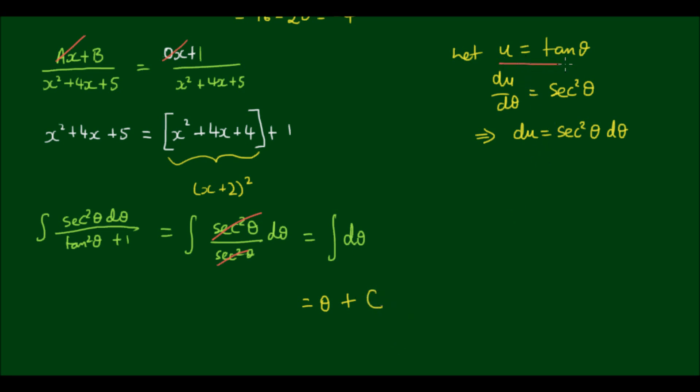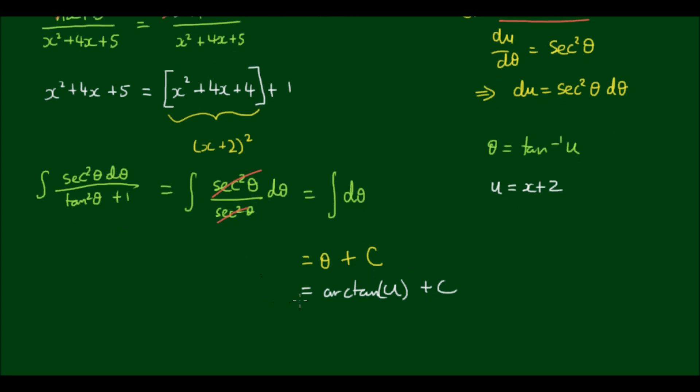Okay, now because we let u equal tan theta, that means theta is equal to the inverse tan of u. So we can write the answer as arctan u plus c. So arctan is just another way of expressing the inverse tan. And for u we let u equal x plus 2 in the beginning. So the final answer is arctan x plus 2 plus c.